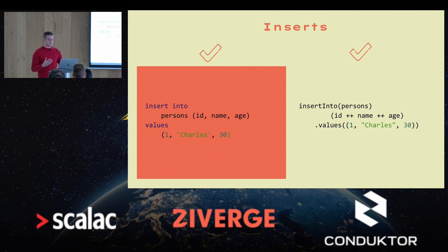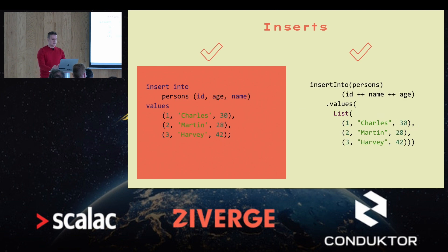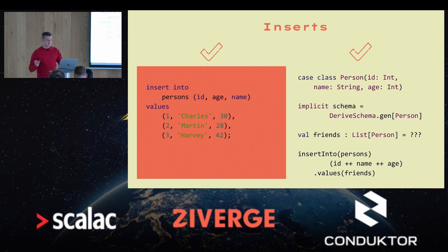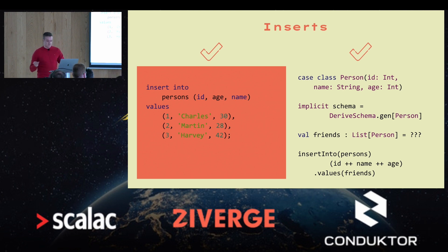If we do everything correctly, the ZioSQL query compiles fine. To insert multiple rows at once, we can simply specify any sequence of tuples and pass them into values. We also support inserting user-defined data types like a Person, for which you need to derive an implicit Zio schema for that data type.